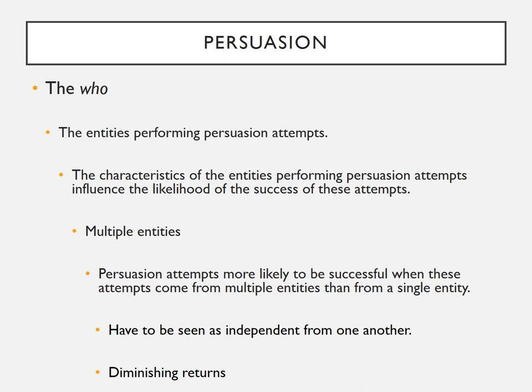There are some caveats to the effects of multiple entities. Multiple entities only seem to work if the targets perceive them as independent of one another — that is, not working together on the persuasion attempt. When people believe multiple entities are in cahoots, the effect disappears. Also, there are diminishing returns for increasing numbers of entities — three entities are better than one, but seven aren't necessarily better than three. For instance, three friends recommending a movie works about as well as seven friends doing so.